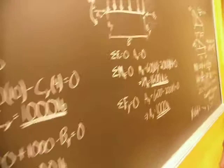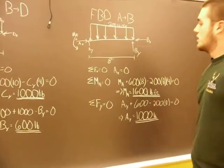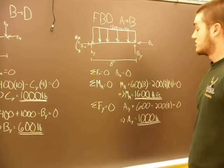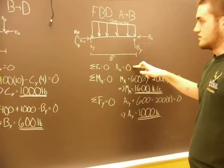The last free body diagram spans from A to B. And you start out again with sum of the forces in the X direction equals zero. Your BX is zero. So your AX has to be zero.